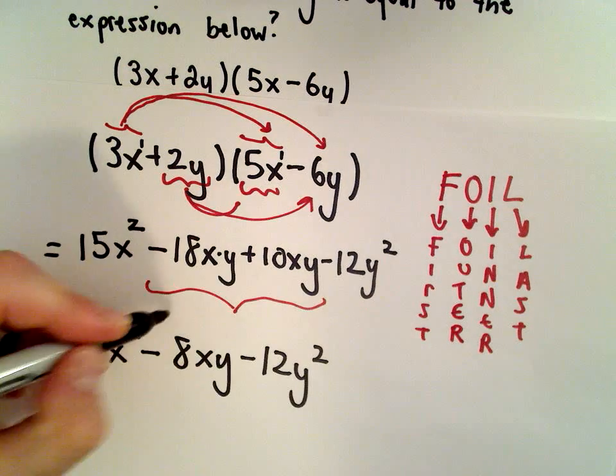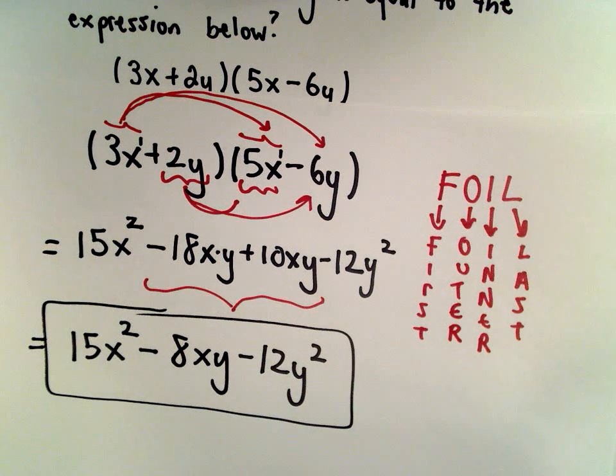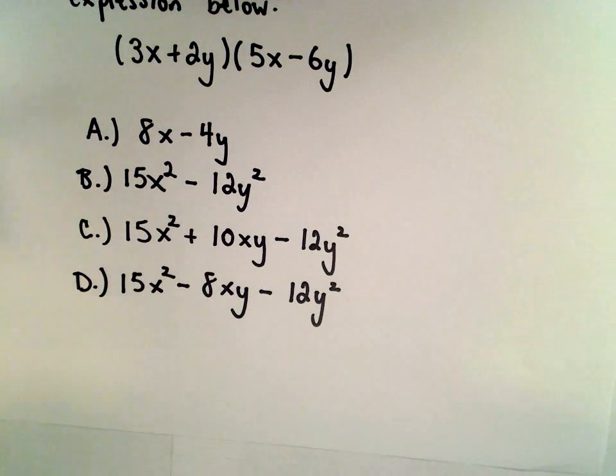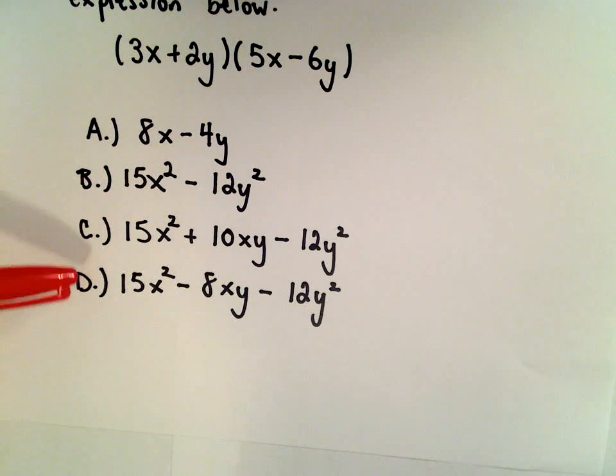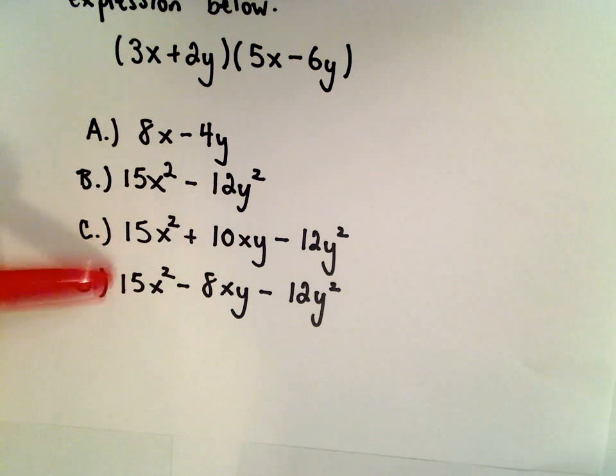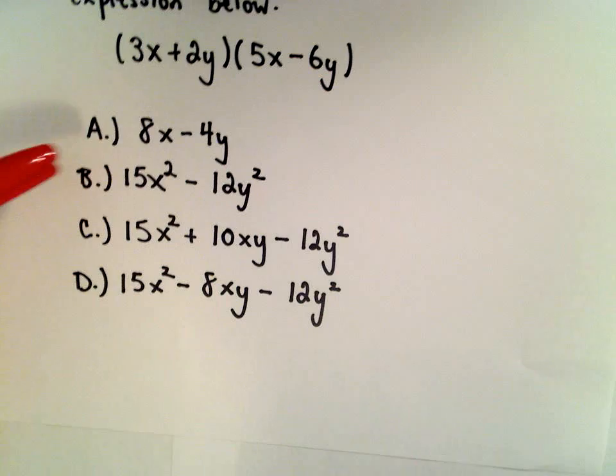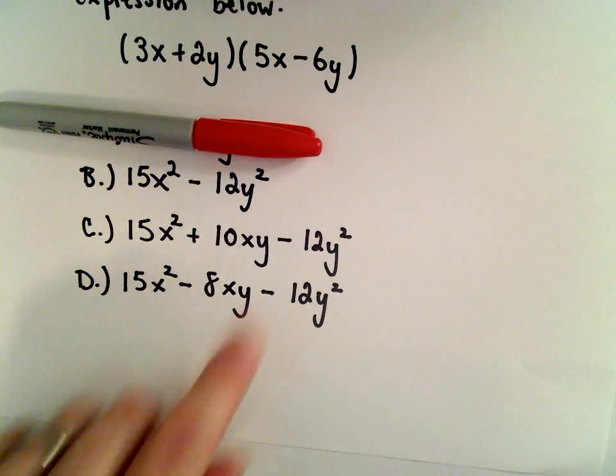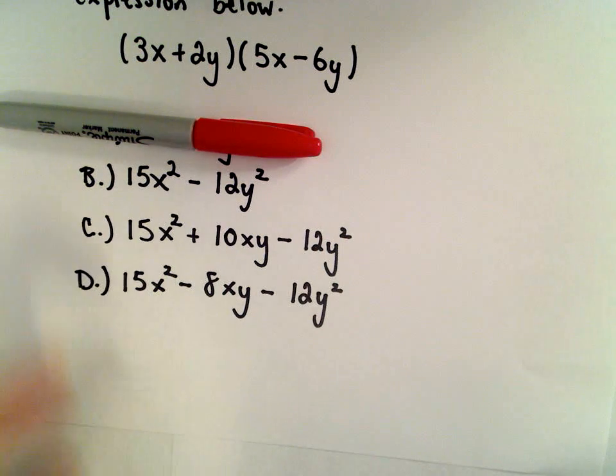Notice if it was a multiple choice test and I had no clue, a lot of these answers have 15x squared, so I bet it's one of those. I would probably chop out A just based on that. These all have the y squared term as well, so at least I'd have it narrowed down to three.